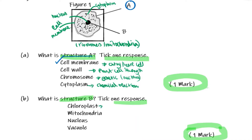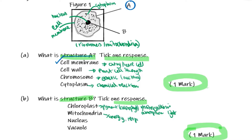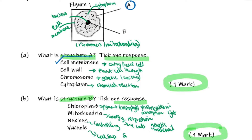Chloroplast is to do with a pigment called chlorophyll, photosynthesis, and absorption of light. Mitochondria is to do with energy and respiration. Nucleus is to do with controlling the cell and genetic material. Vacuole is to do with cell sap and supporting the cell.